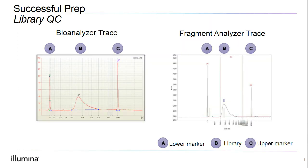To evaluate library quality, we need to look at our library traces. Here we have an example of a bioanalyzer trace on the left and a fragment analyzer trace on the right, and they look very similar. Both have upper and lower markers and library peaks. These traces help us confirm that we have a library. We can check whether our library has the expected average library size, and we can see if we have any additional small or large library peaks that may affect sequencing.